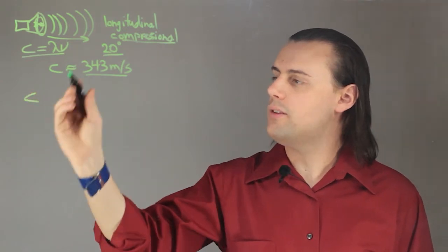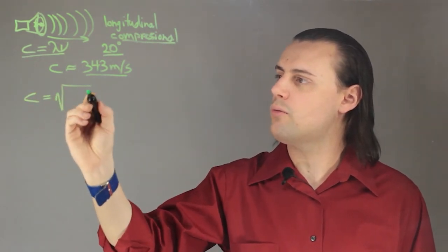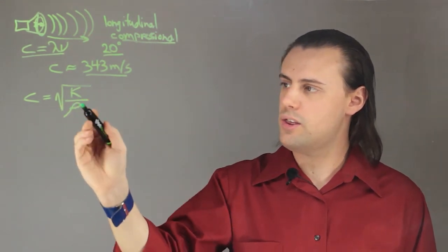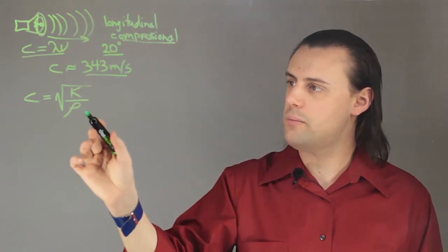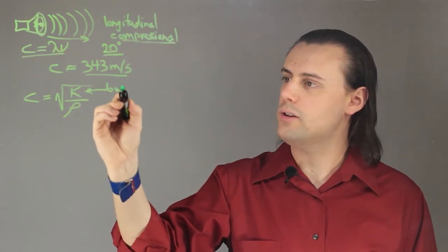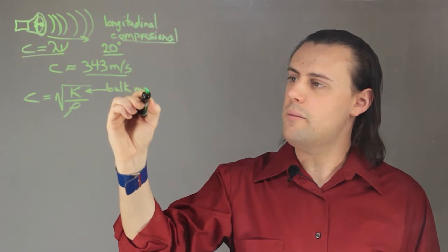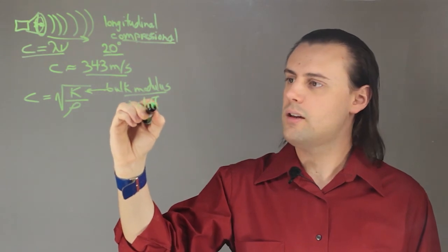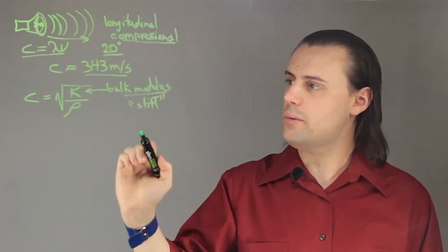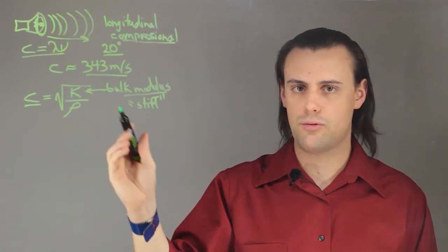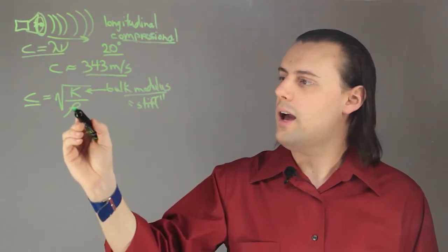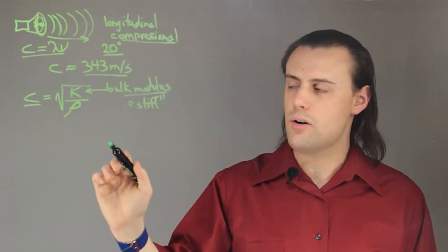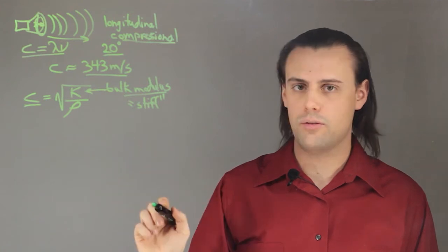The speed of the sound is more generally given as the square root of the bulk modulus K divided by the density of the medium. This bulk modulus is a number that characterizes how stiff the material is. The more stiff the material is, the greater the speed of sound through that material. Likewise, if the density is very low, then the speed of the sound will also increase.